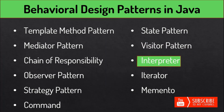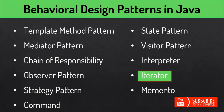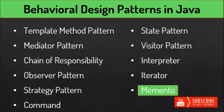The Interpreter design pattern defines a grammatical representation of a language and provides an interpreter to deal with its grammar — the Java compiler is the best example, interpreting Java source code into bytecode that the JVM understands. The Iterator pattern is one of the behavioral patterns and provides a standard way of traversing through a group of objects, most widely used in the Java Collection Framework. Finally, the Memento design pattern saves the state of an object so that we can restore it later, implemented in such a way that there is no access to the saved state data outside the object.